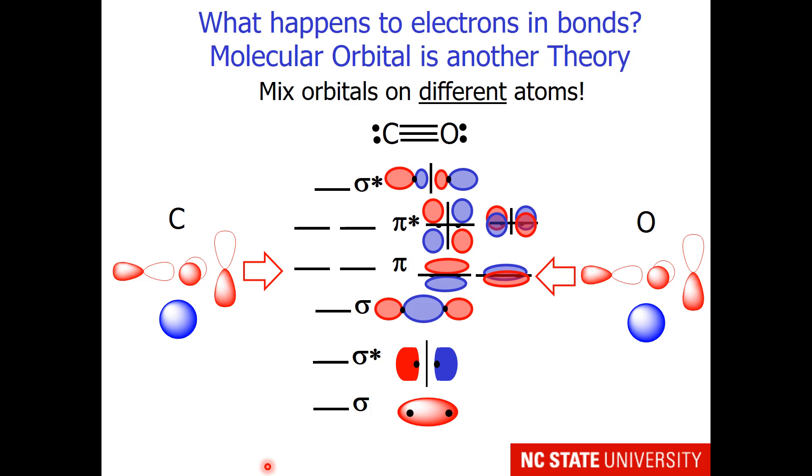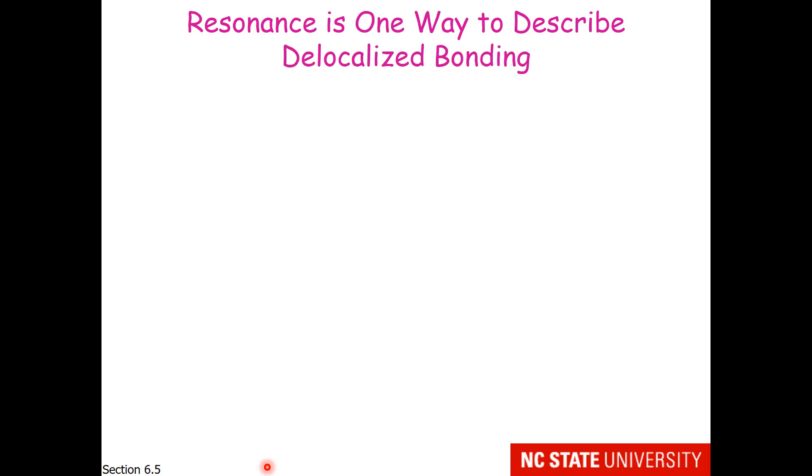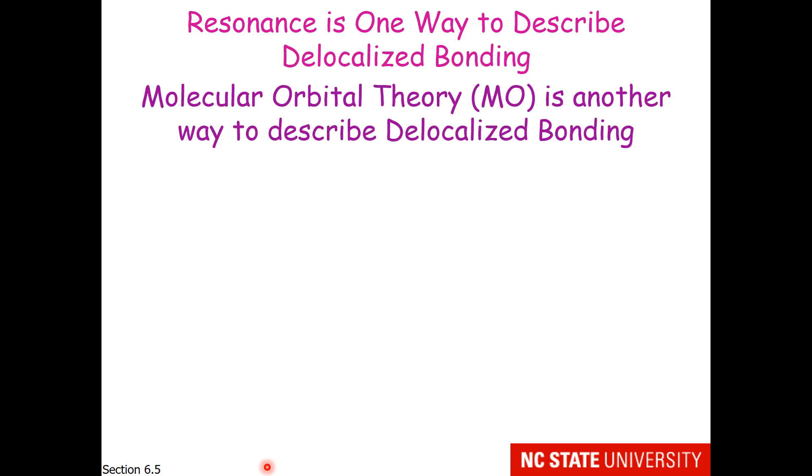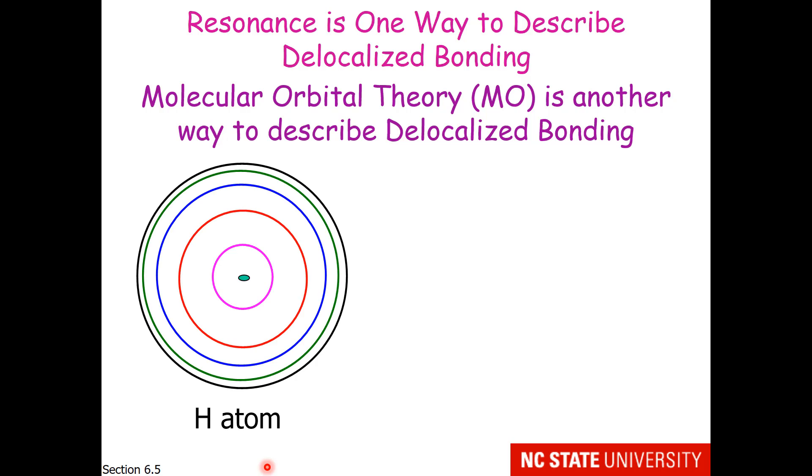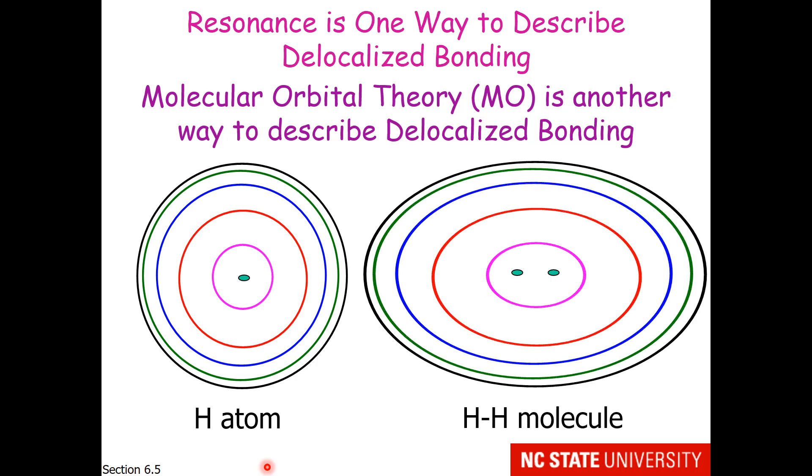You're going to need to wait a little further into the lecture to understand this diagram. In building Lewis structures, resonance was presented as a way to describe delocalized bonding. MO theory is another way to describe delocalized bonding, and it's very mathematically based. The idea is, if the hydrogen atom can have orbitals, why can't the hydrogen molecule have orbitals? We're going to be building orbitals from molecules.